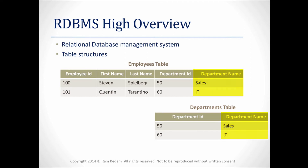How can we solve this problem? Instead of repeating the same column twice, we will remove it from the employees table, and by creating a logical connection between the departments and employees tables using the department ID column, we can find the department name of each employee.